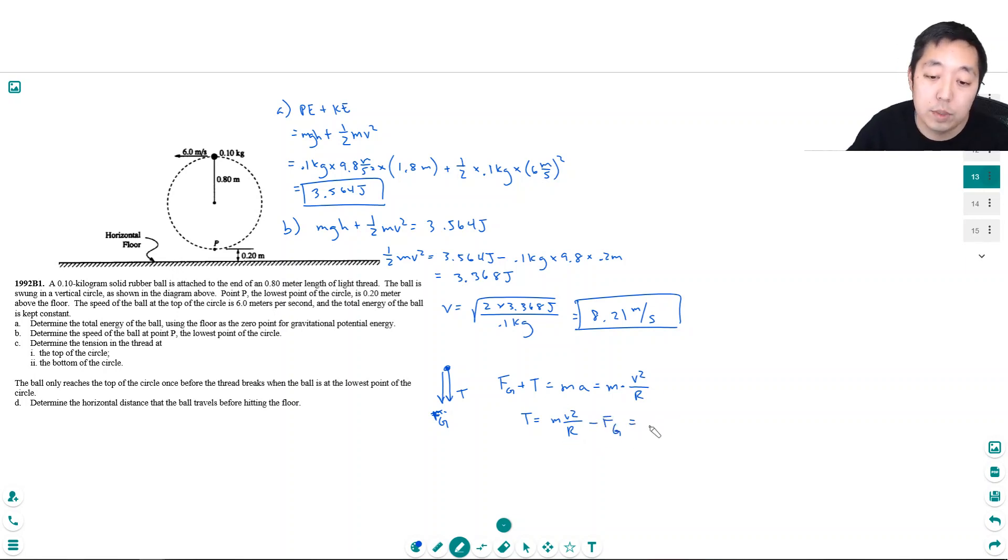So t, I can solve for t, it's mv squared over r minus the force of gravity. Okay so M is 0.1 kilograms. We already decided what the velocity was at the top, it's 6 meters per second squared. The radius of the circle of its path is 0.8 meters. And the force of gravity is just Mg which is 0.1 kilogram times 9.8. So the tension would be 0.1 times 6 squared divided by 0.8 minus 0.1 times 9.8. I get 3.52 newtons.